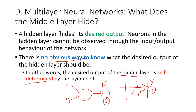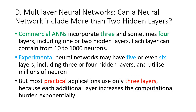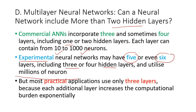What we can see is the final result in the output layer, and whether it is nearing convergence or not. What is happening in the middle layer is a black box. It is possible to have more than two hidden layers. Commercial ANNs sometimes have three or four layers including one or two hidden layers, with each layer containing from 10 to 1000 neurons. Experimental neural networks may have five or six layers and utilize millions of neurons, but practical applications normally use only three layers because each additional layer increases the computational burden exponentially.